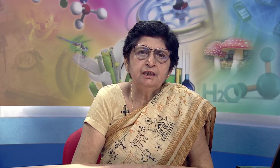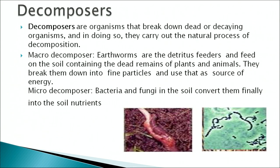The most important biotic components are the decomposers. Decomposers are organisms that break down dead and decaying organic matter, carrying out the natural process of decomposition. They are divided into two types: macro decomposers and micro decomposers. Macro decomposers, like earthworms, are detritivorous feeders that break dead remains into fine particles. Micro decomposers, such as bacteria and fungi, convert these finally into soil nutrients.